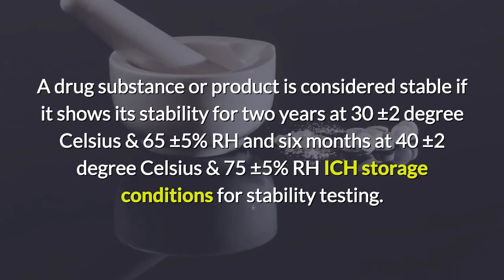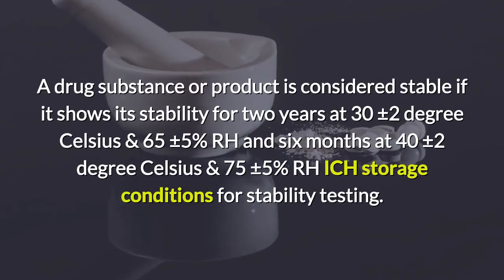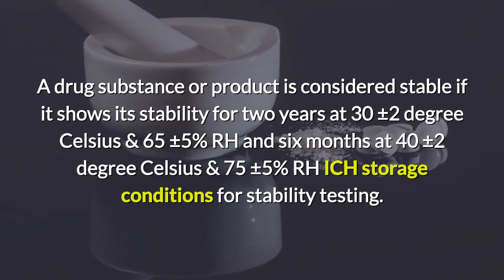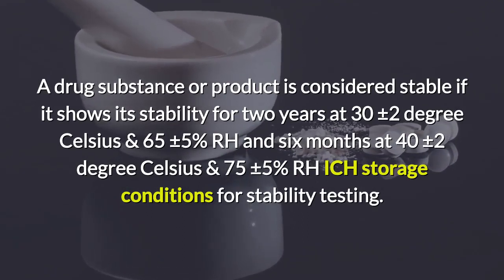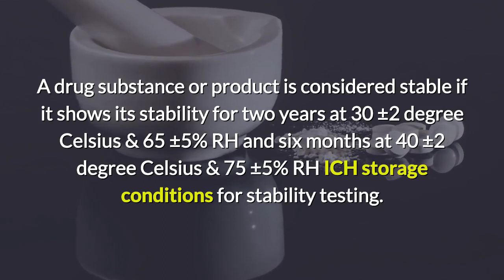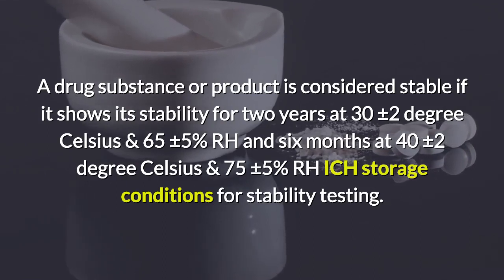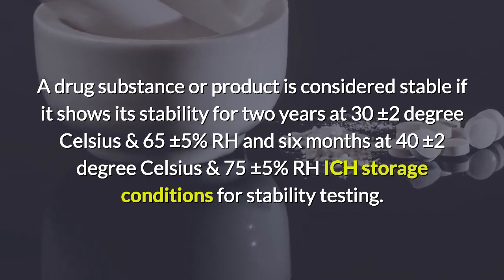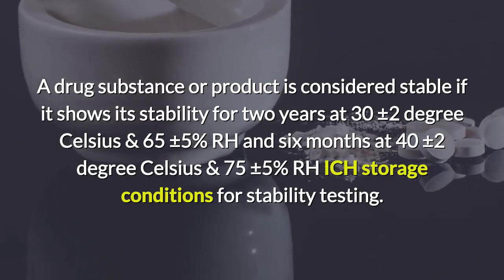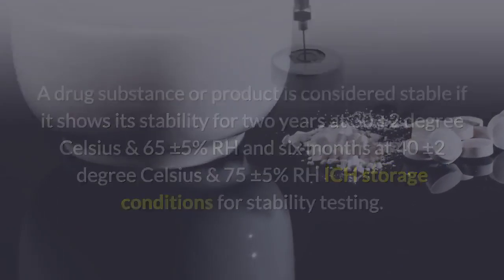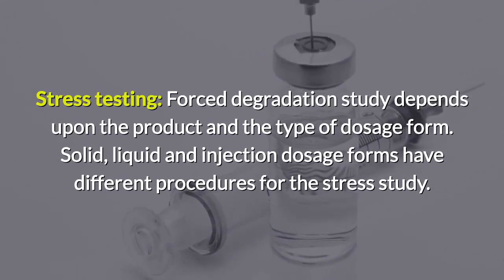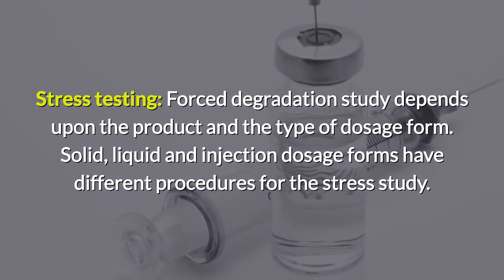A drug substance or product is considered stable if it shows stability for two years at 30 ± 2°C and 65 ± 5% RH, and six months at 40 ± 2°C and 75 ± 5% RH as storage conditions for stability testing. Stress testing and forced degradation studies depend upon the product and the type of dosage form.